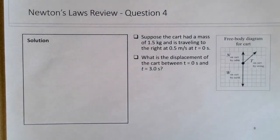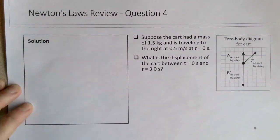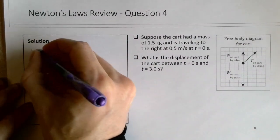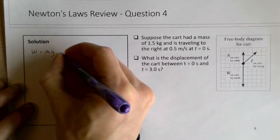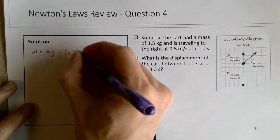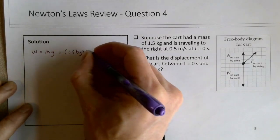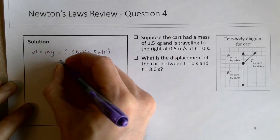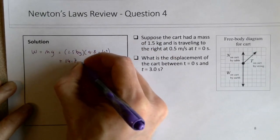So if we consider the weight force equals mg, the magnitude of the weight force is equal to mg, that's equal to 1.5 kg times 9.8 meters per second squared, and this is 14.7 N.